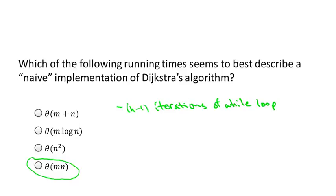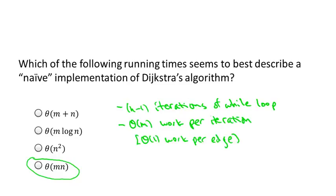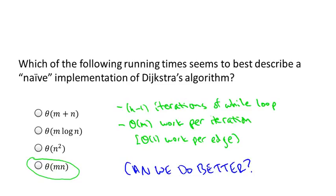This naive approach might handle graphs with hundreds or thousands of vertices, but we'd like to scale to much larger graphs — potentially a million vertices. The answer is yes, we can do better, not by changing the algorithm, but by changing how we organize the data. This will be the first time in the course where we use a data structure to get an algorithmic speedup — a lovely interplay between algorithm design and data structure design.